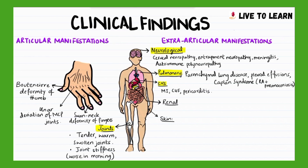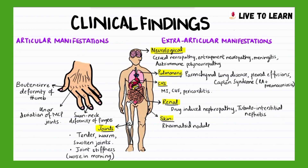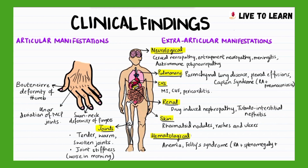The kidneys usually are not directly affected by rheumatoid arthritis, but secondary involvement is common, which includes drug-induced nephropathy and tubular interstitial nephritis. Rheumatoid nodules and vasculitic lesions of skin may manifest as palpable purpura or skin ulceration. Some patients with rheumatoid arthritis have anemia of chronic disease. Felty syndrome, which is a combination of rheumatoid arthritis, splenomegaly, and neutropenia, is also seen in such patients.